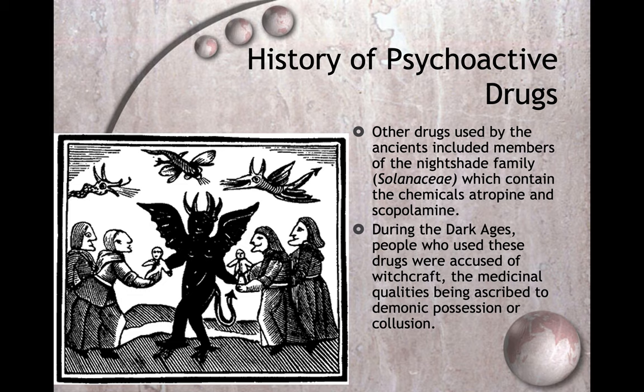Other drugs used by the ancients included members of the nightshade family (Solanaceae), which contains the chemicals atropine and scopolamine. During the Dark Ages, people who used these drugs were accused of witchcraft, with the medicinal properties being ascribed to demonic possession. There's a reason why witches are shown flying on broomsticks — broomsticks used to be made out of bushes of the nightshade family.